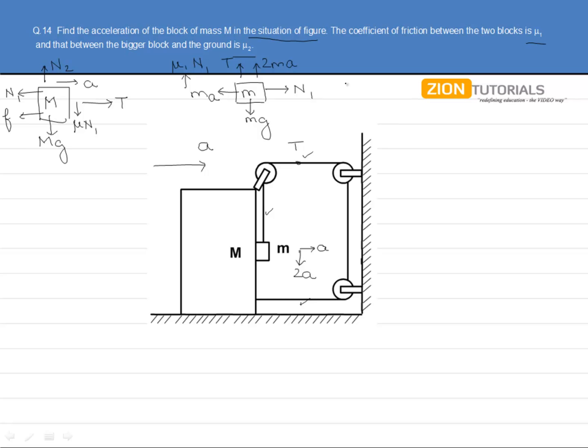Now, framing the equations, we can say that N1 equals mA, giving us equation number 1. Further, from this block only, we can get 2mA plus tension equals mg minus μ1 N1. That is, tension equals mg minus (2 + μ1)mA, giving us equation number 2.